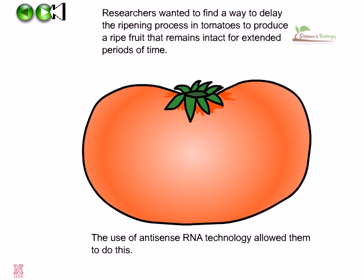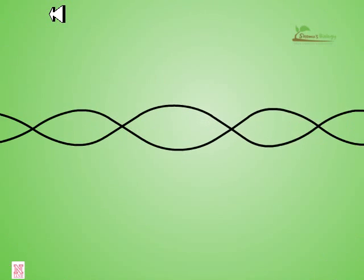Researchers wanted to find a way to delay the ripening process in tomatoes, to produce a ripe fruit that remains intact for an extended period of time. The use of antisense RNA technology allowed them to accomplish this very important task.